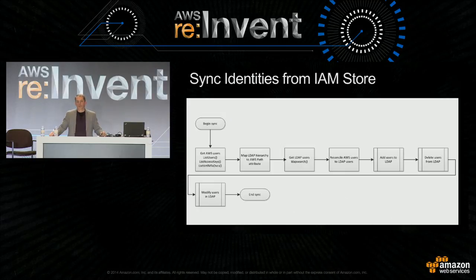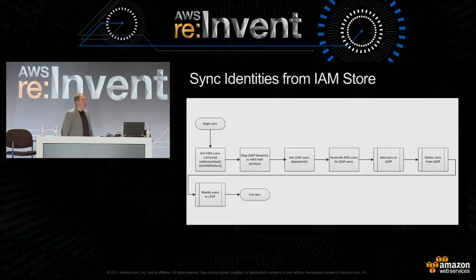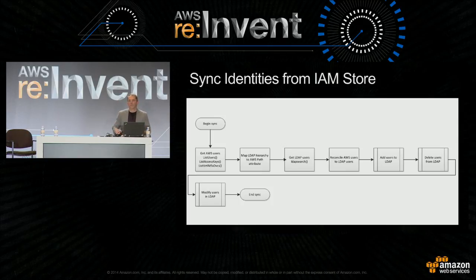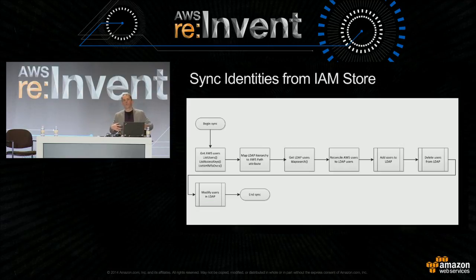To create such a service: get your AWS users using those API calls, take the path of those users and rehydrate it to a base distinguished name for your directory, then do an LDAP search for all users. Do the reconciliation—you have a bucket of add users, a bucket of delete users, a bucket of modify users. The difference here is that we're using IAM as an IDaaS to push authoritative changes into an on-premises environment.